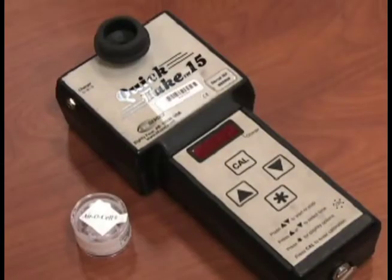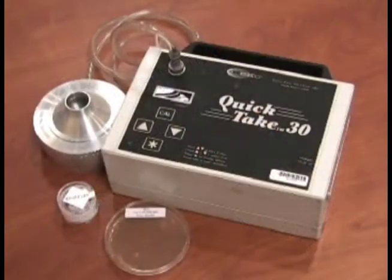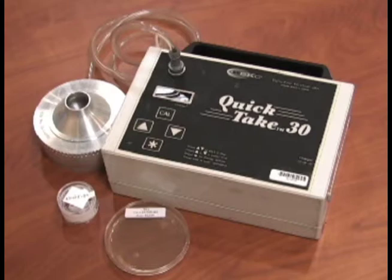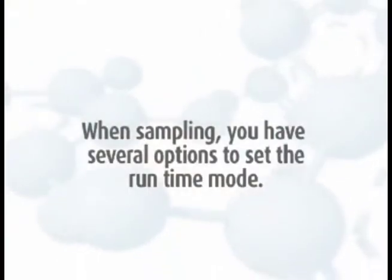Quick Take 15 pumps can only be used for sampling with Air-O-Cell cassettes and are set at 1.5 liters per minute with a preset sample duration of five minutes. Quick Take 30 pumps can be used for sampling with Air-O-Cell cassettes at 1.5 liters per minute, or agar plates with Anderson N6 samplers at 28 liters per minute.